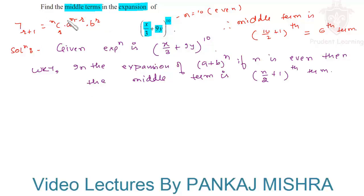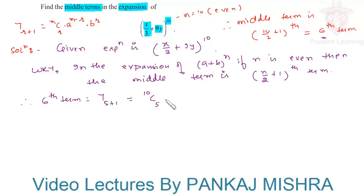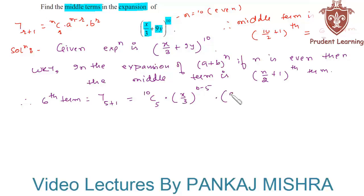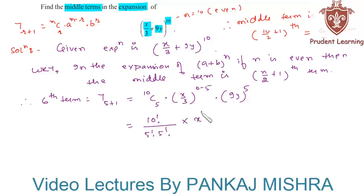Using this formula, we find the 6th term: T6 = T(5+1) = 10C5 · (x/3)^(10−5) · (9y)^5, which gives us 10C5 = 10! / (5! · 5!) into x^5 / 3^5 into 9^5 · y^5.